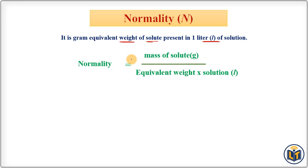Its formula can be given: normality is equal to mass of solute in grams divided by equivalent weight and multiplied by volume of solution in liters, where equivalent weight is equal to molecular weight of substance divided by valency.